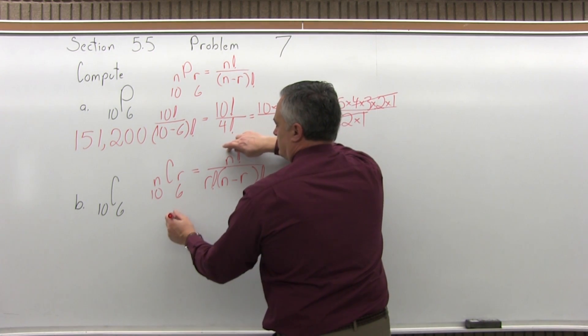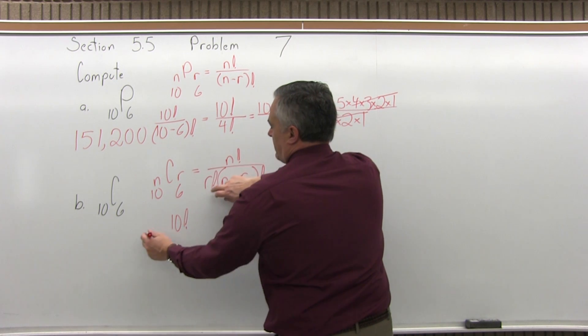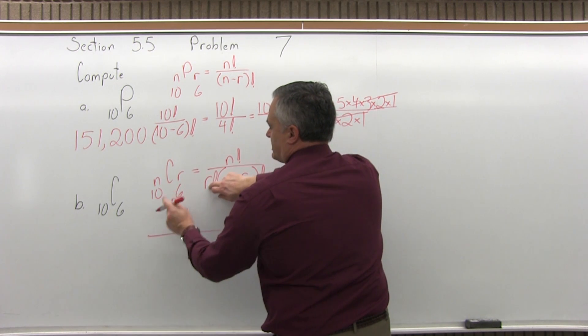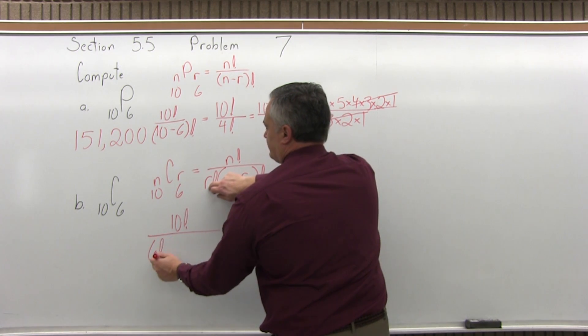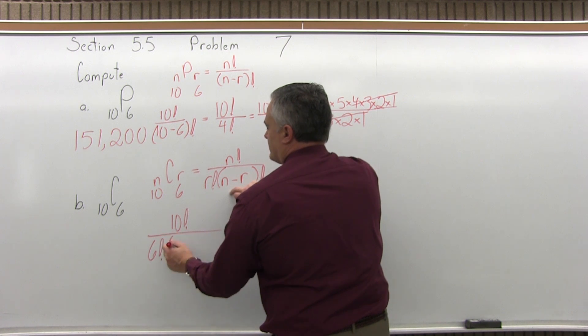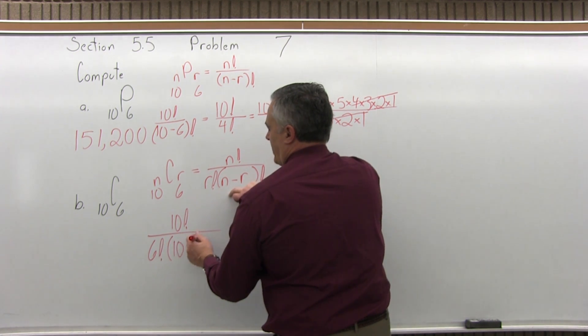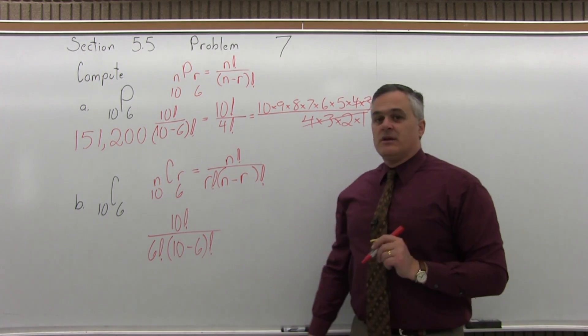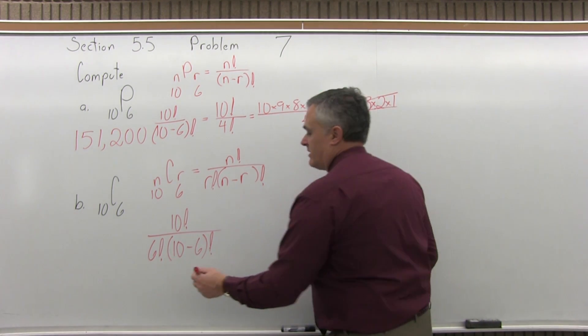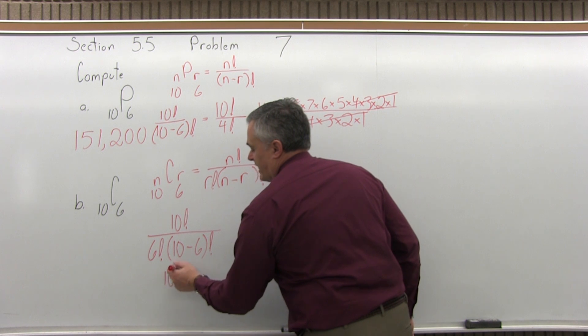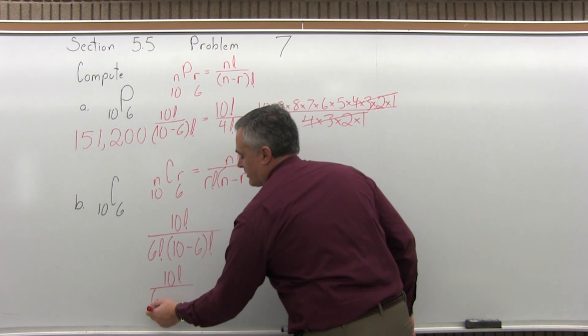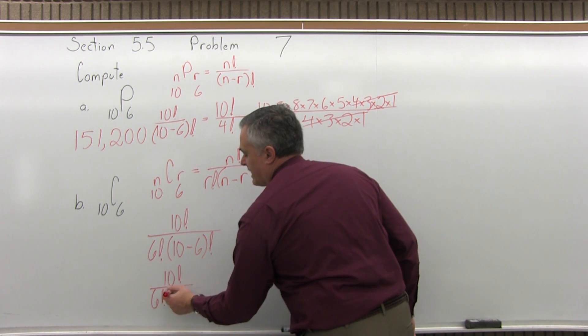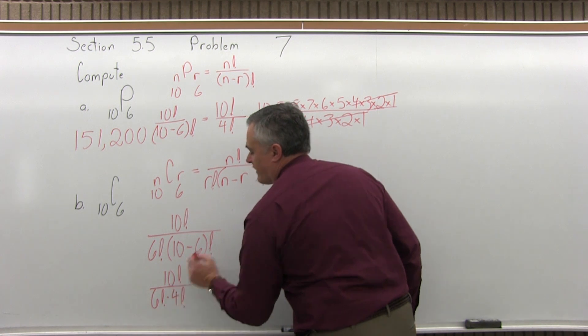Fill it in. Numerator, 10 factorial. Denominator, r factorial in front of the parentheses, so 6 factorial. In parentheses, n minus r, so 10 for the n minus 6 for the r, close the parentheses, factorial. Now simplify your parentheses before you go any further. So the top will still have a 10 factorial in it. You'll have a 6 factorial in the denominator, and that will be times 10 minus 6 will give me a 4 factorial.